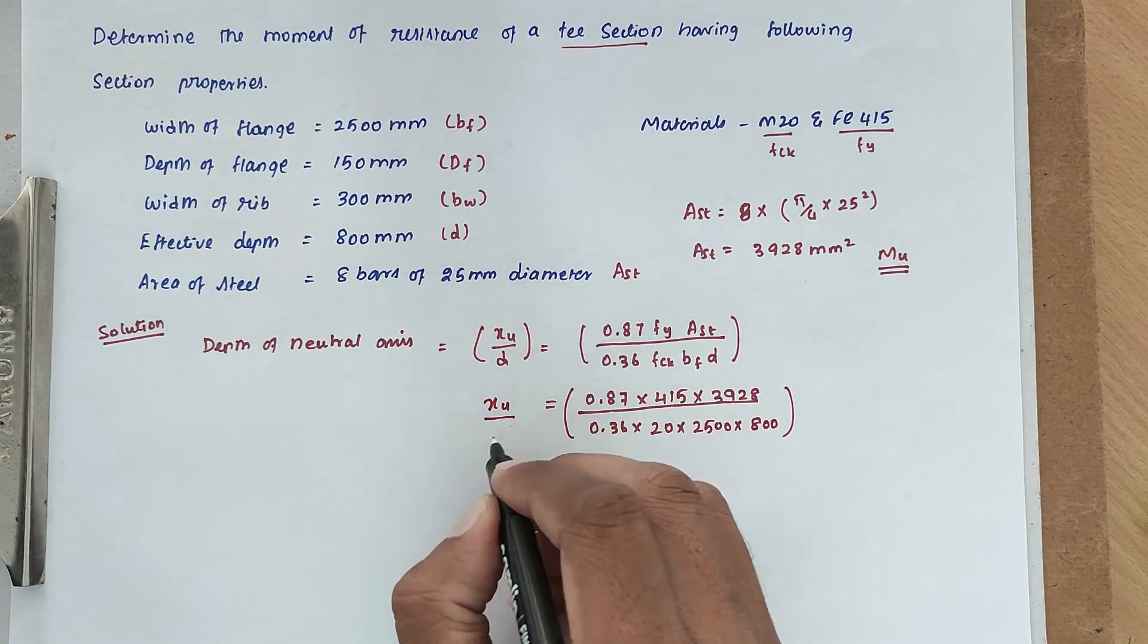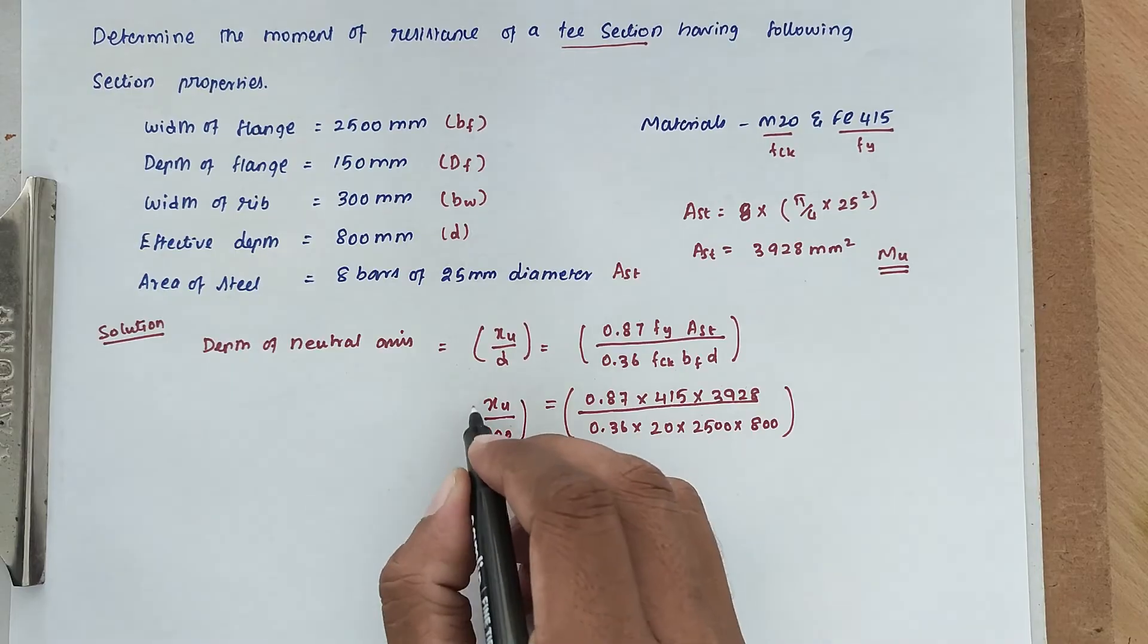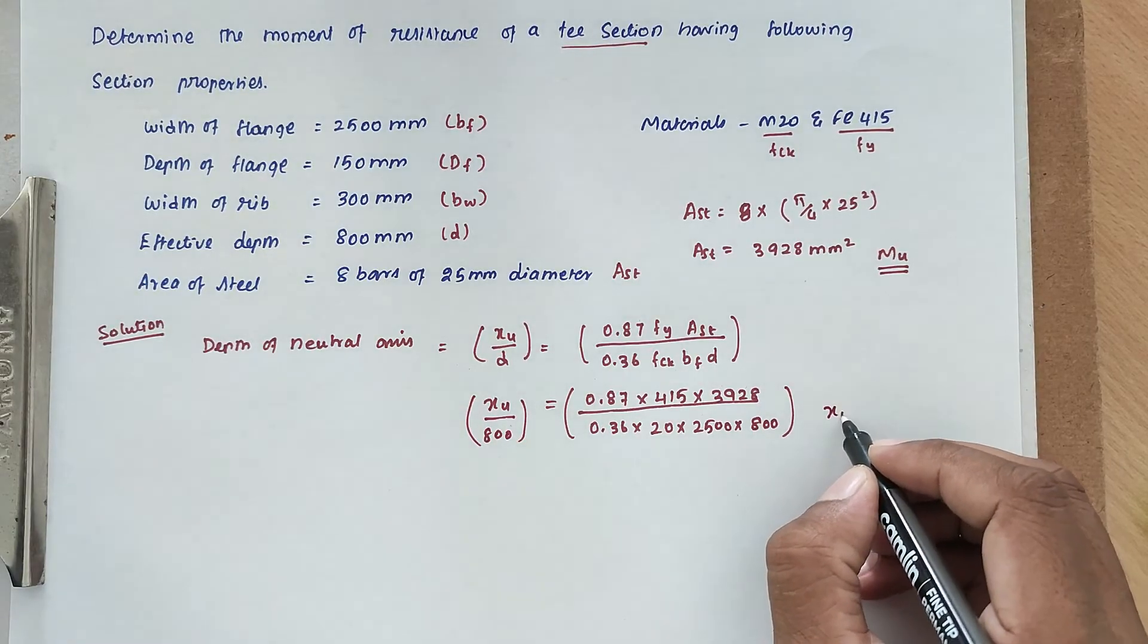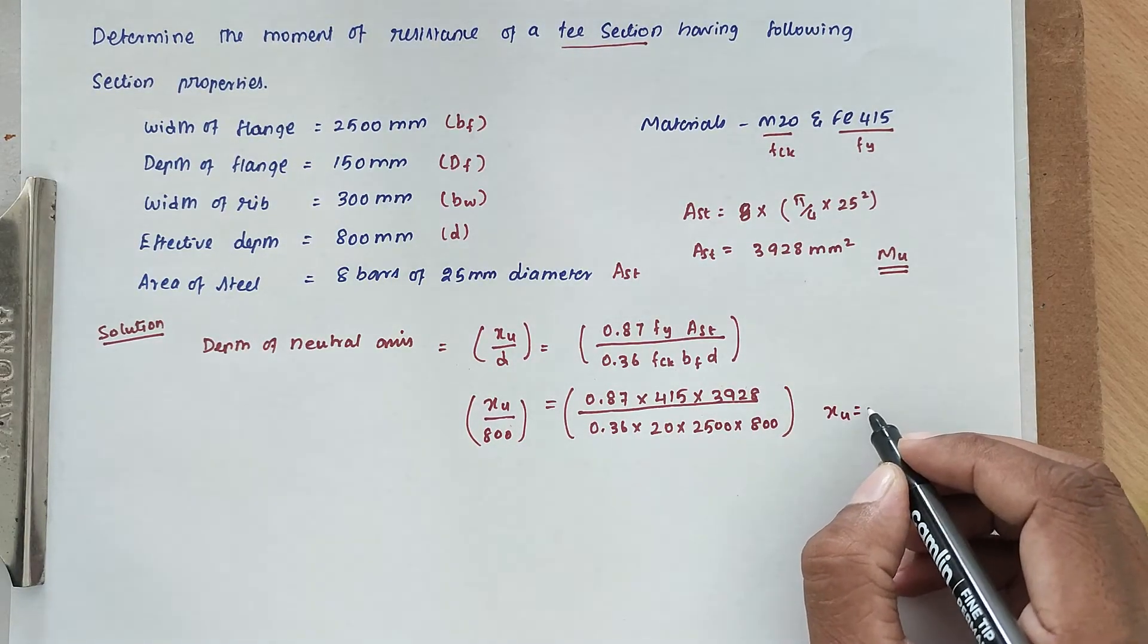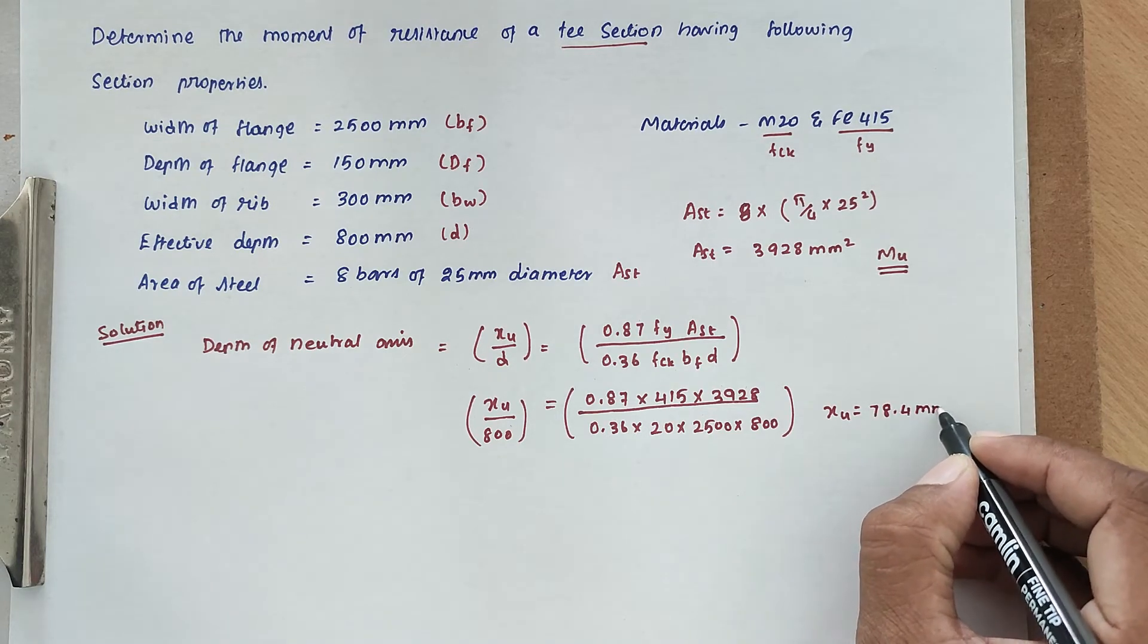Now here XU divided by D, the effective depth is 800 mm. Solving this we got the value XU equal to 78.4 mm.